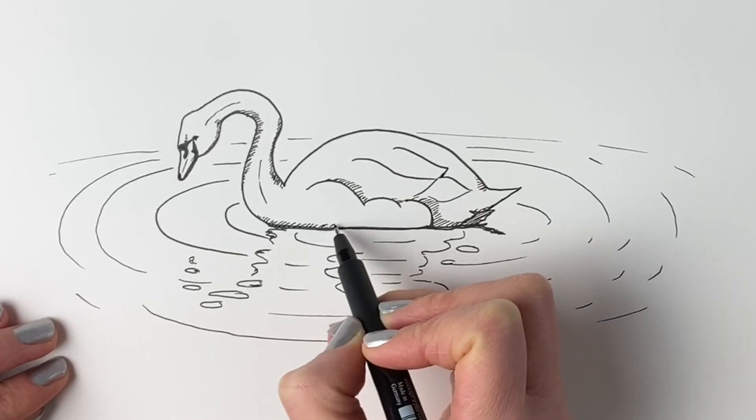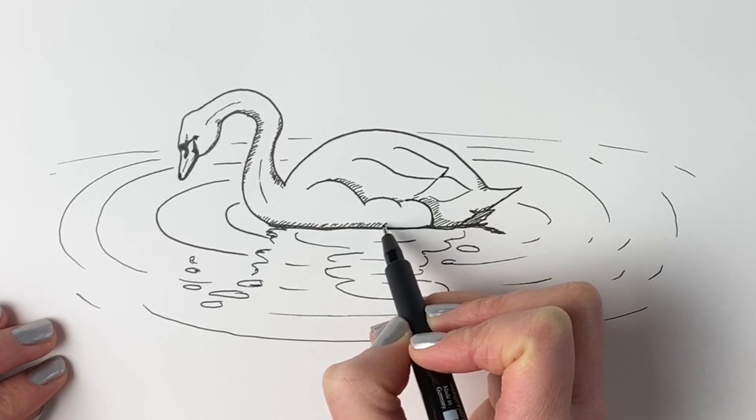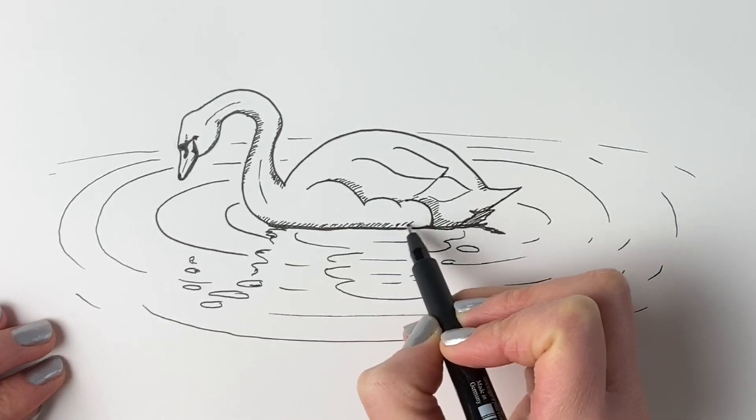Did you know that baby swans, which are called cygnets, they stay with their parents until they're three or four years old, which is really cute. They only leave them when they go off to mate.